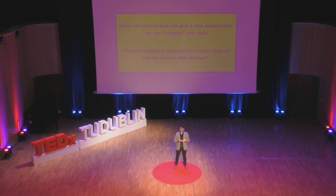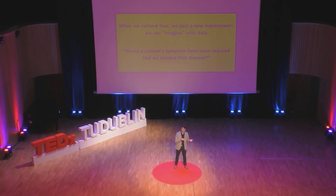This ability to remove bias and understand cause and effect gives us a brand new superpower — it lets us imagine with data. It lets us take a dataset and replay it in a different scenario to see what would have happened under different situations, and from this we can make better and better decisions. One example: would a patient's symptoms have been reduced had we treated a specific disease? Contrary to what actually happened, if we'd done something different, would their symptoms have gone away? And by doing that, can we identify what disease is causing their symptoms in the first place?